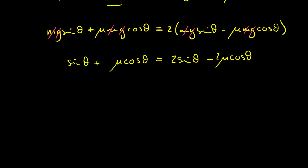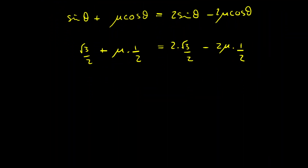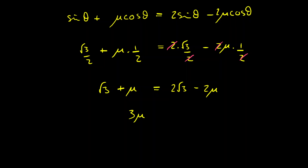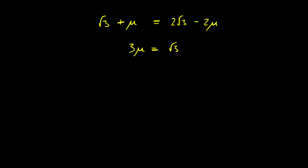Now we substitute our value for θ = 60°. Sin 60° = √3/2 and cos 60° = 1/2. Substituting: √3/2 + μ/2 = 2(√3/2) − 2μ(1/2). The twos cancel, and multiplying the whole equation by 2 gives: √3 + μ = 2√3 − 2μ. Rearranging: 3μ = √3, so μ = √3/3.